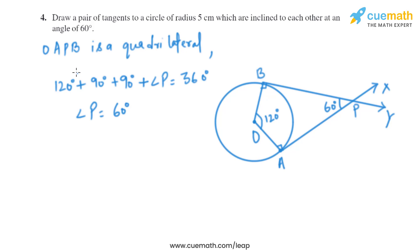Now let's do the justification of this construction. OAPB is a quadrilateral, so the sum of all the interior angles of a quadrilateral is 360 degrees. So it is 120 plus 90 plus 90 plus angle P, that will be equal to 360 degrees. So I'll get angle P equals 60 degrees.